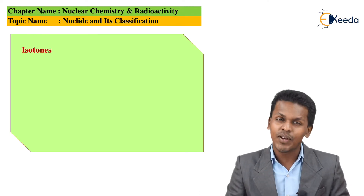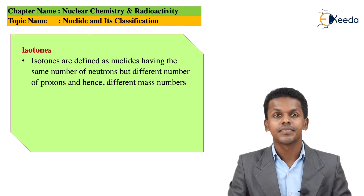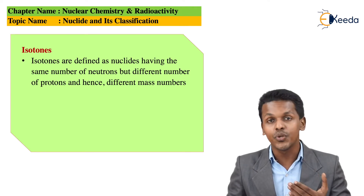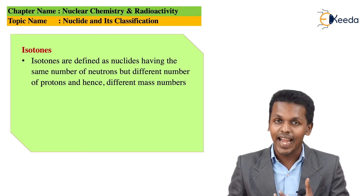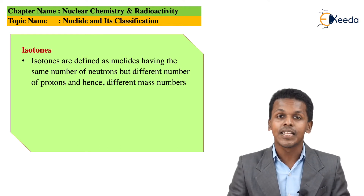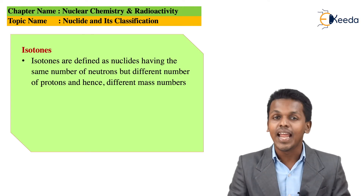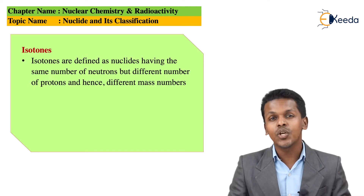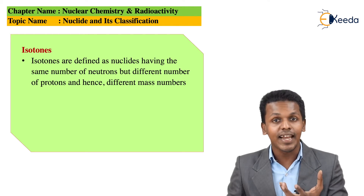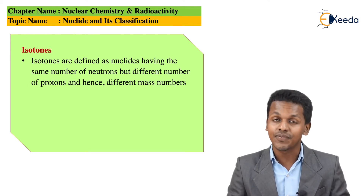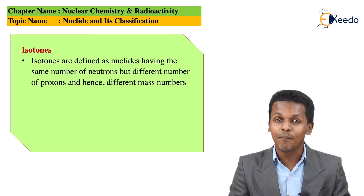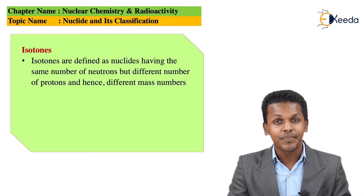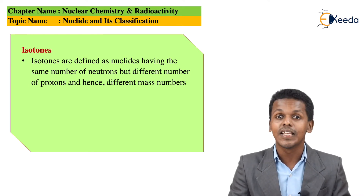Isotones are two elements having the same number of neutrons. For example, carbon-6 with atomic number 6 and atomic mass number 13 has a total neutron count of 7. Similarly, nitrogen-7 with atomic number 7 and atomic mass number 14 also has a total neutron count of 7. Since both elements have the same number of neutrons, these two elements are called isotones of each other.